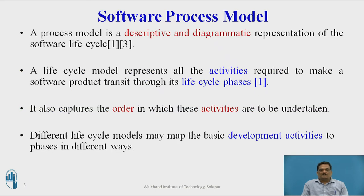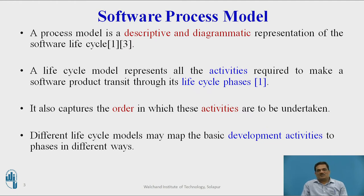Before discussing different process models, let us have a generic definition about software process model. A software process model is a descriptive and diagrammatic representation of the software lifecycle. A lifecycle model represents all the activities required to make a software product transit through the lifecycle phases, and captures the order in which these activities are to be undertaken.